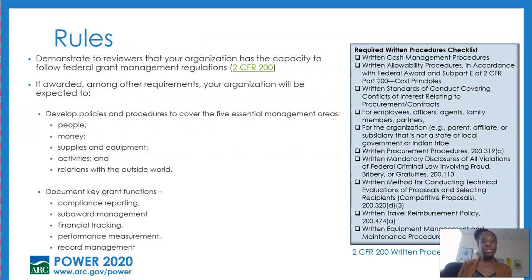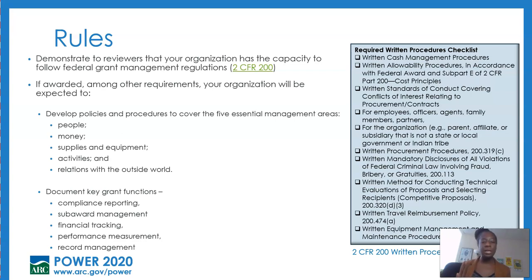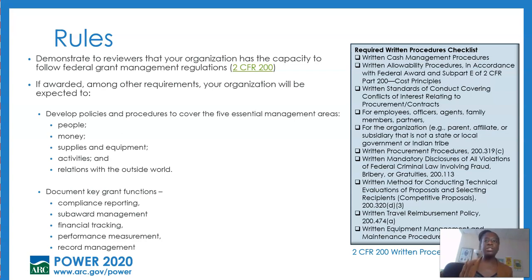The second element of structure is rules. You really want to make sure that you are demonstrating to reviewers that your organization has the capacity to follow all of the federal regulations outlined in 2 CFR 200 to administer and manage your Power project. 2 CFR 200 stands for the Code of Federal Regulations. As you can imagine, when large amounts of money are being given out, there are going to be some strings attached. 2 CFR 200 really outlines all of the federal regulations that an organization should be aware of if they are accepting Power money or any federal grant money. If you're awarded, among other requirements, your organization will be expected to develop policies and procedures for how things will happen during the course of the grant period, how the work will be done.